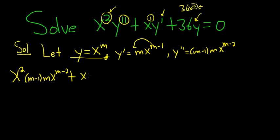Plus x, and then y prime was m, x to the m minus 1, plus 36, and then y is just x to the m, and this is equal to 0.